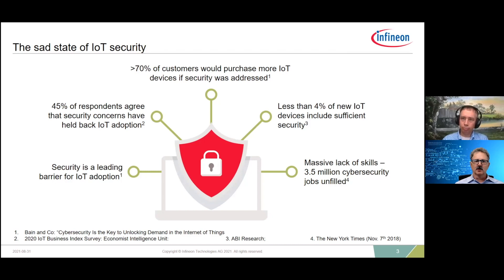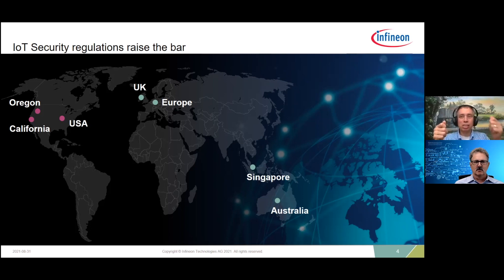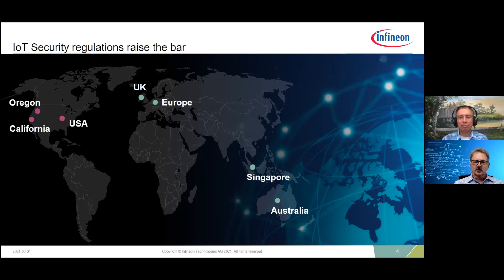We're starting to see laws being developed across various geographies. You've got liability laws coming out of Europe and out of California. Some governments are using a carrot approach, some are using a stick. Either way, it's a strong incentive for manufacturers to implement strong cybersecurity — either the carrot of increased revenues and sales, or the stick of not being able to sell in a particular geography.